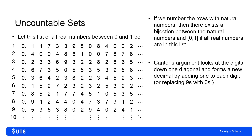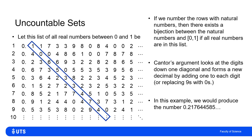Cantor's argument looks at the digits down one diagonal and says: I can form a new decimal by adding one to each digit, but replacing nines with zero — this is like modular arithmetic. So if I take this diagonal, down that diagonal I've got 1, 0, 6, 5, 3, 3, 4, 7, 4. I generate the new decimal 0.2176445855. So I pick that diagonal and all the way down that infinitely long diagonal, I just add one to each number.